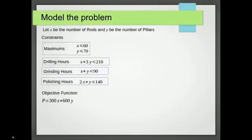Then we've got the objective function. And if you remember, we made $300 profit for each rod and $600 for each pillar. So that gives us 300x plus 600y. Now do bear in mind that could be simplified down to x plus 2y.